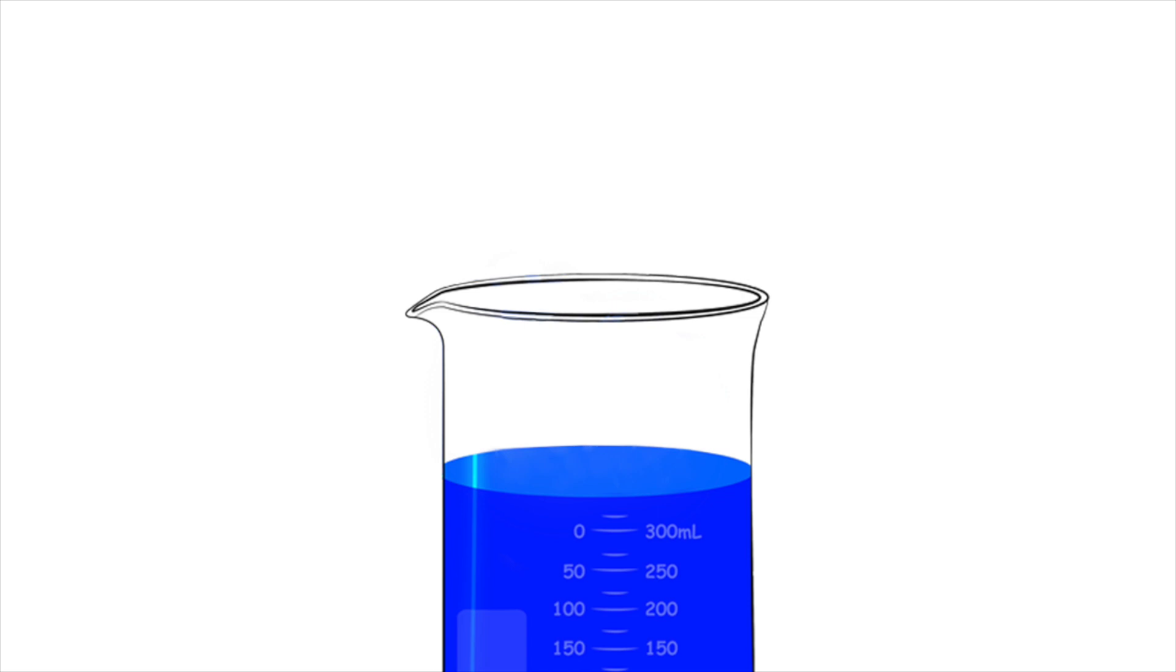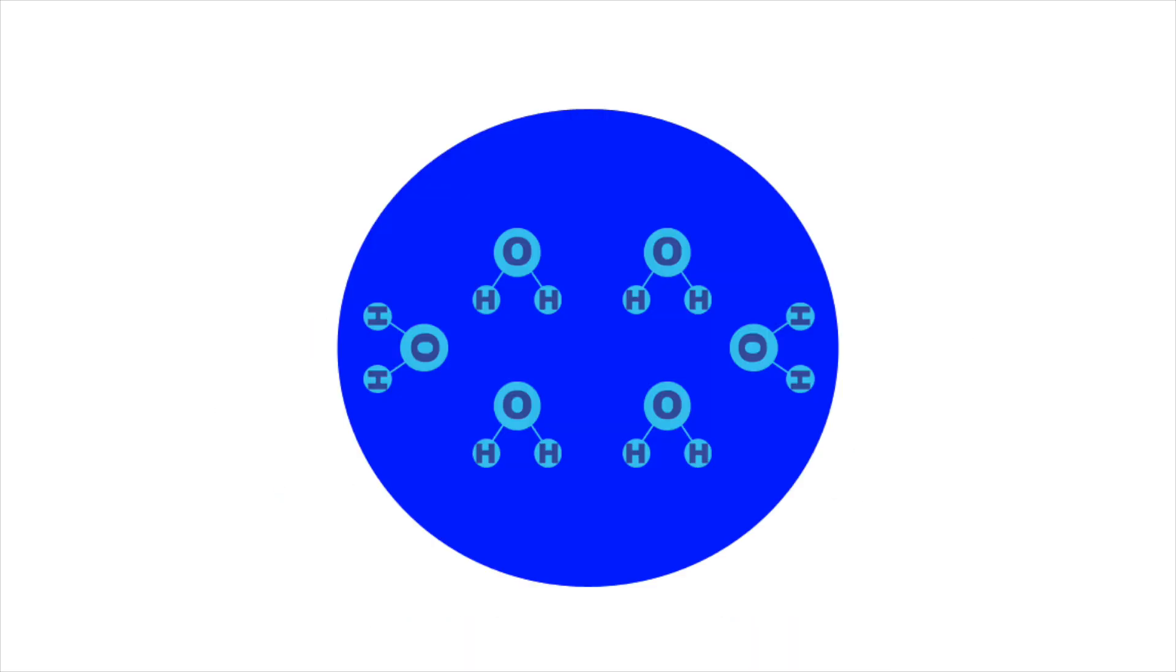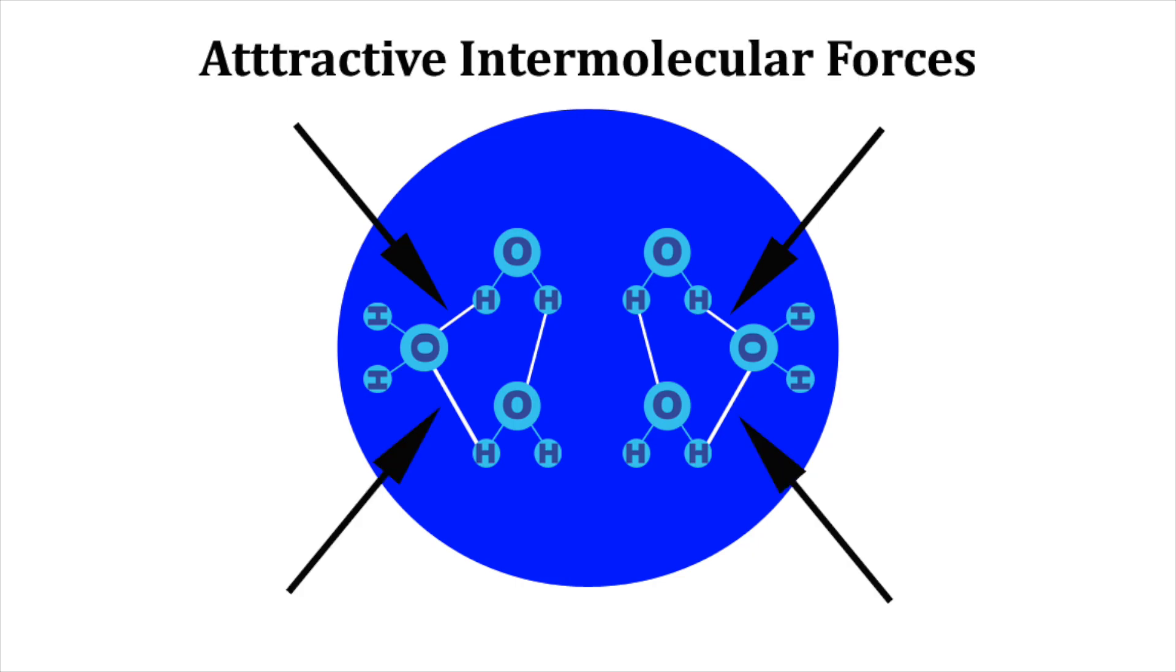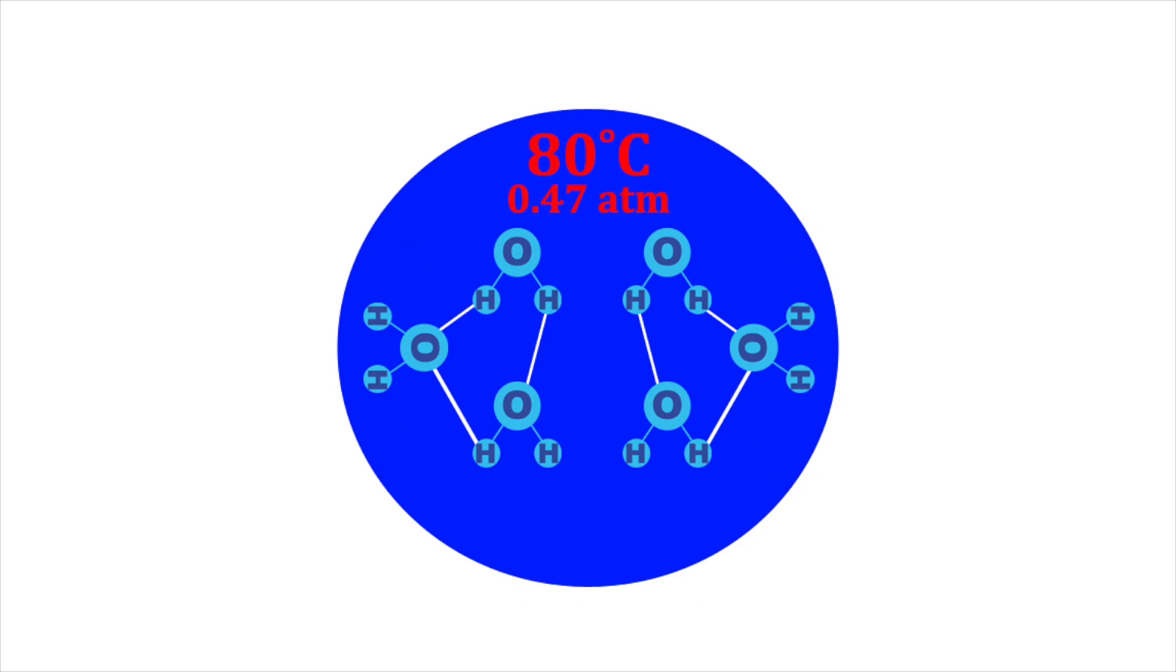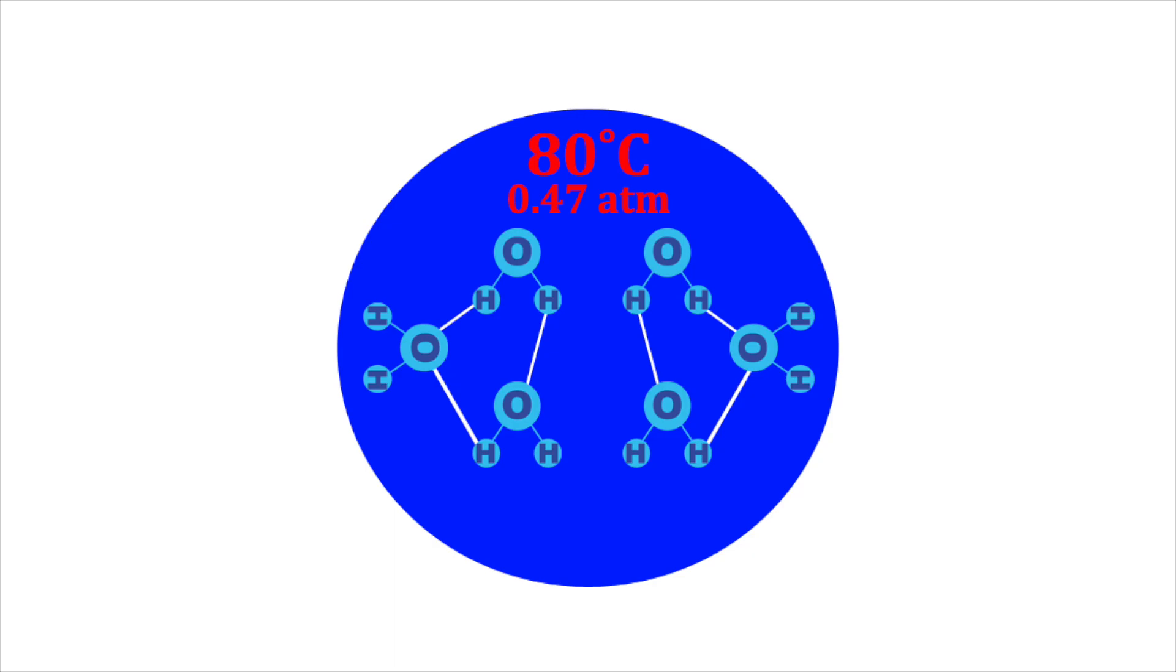Now, let's take a closer look at the water molecules on the surface of water. Attractive intermolecular forces, typically hydrogen bonds, form between the water molecules. As the temperature of water rises, the vapor pressure of the water molecules on the surface also rises.